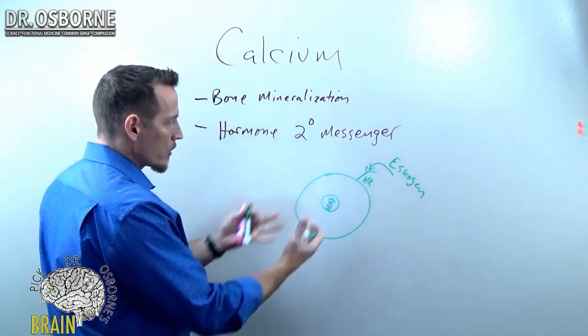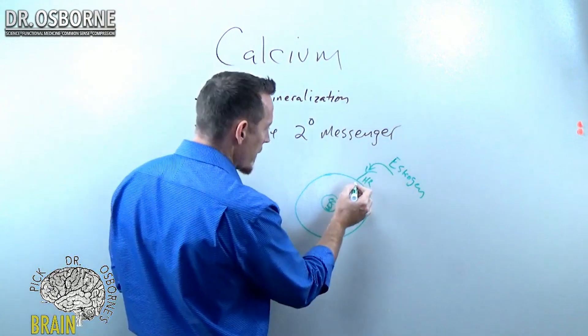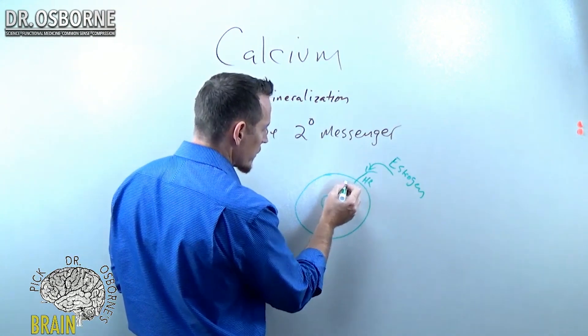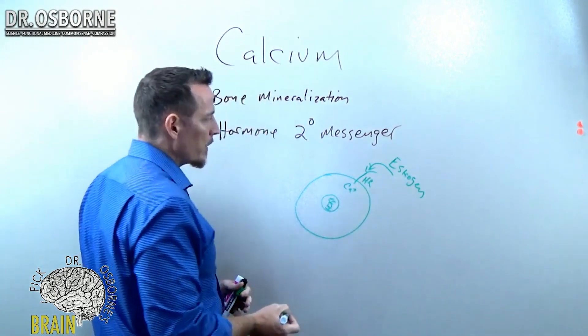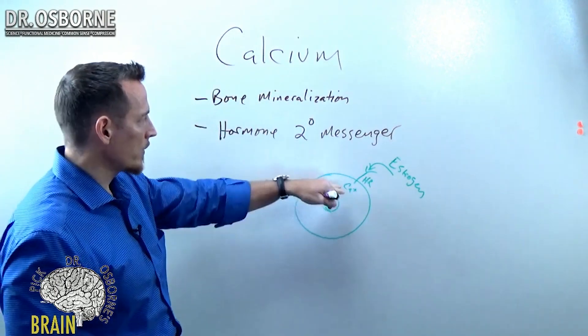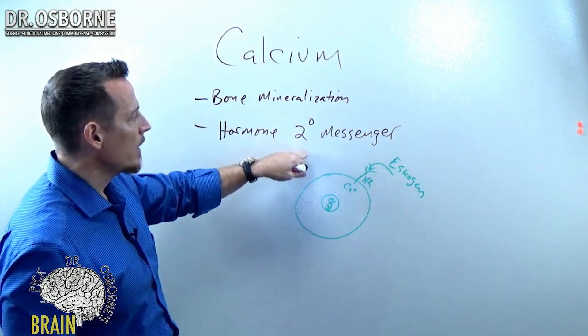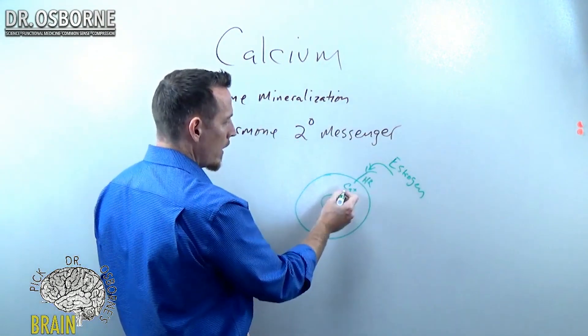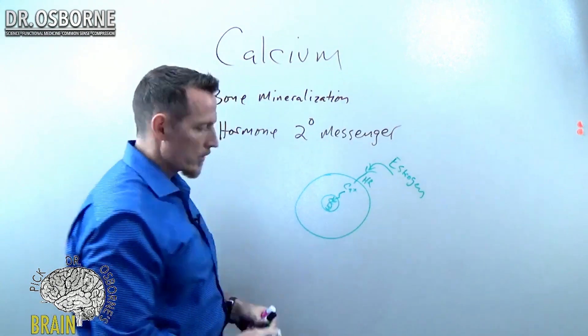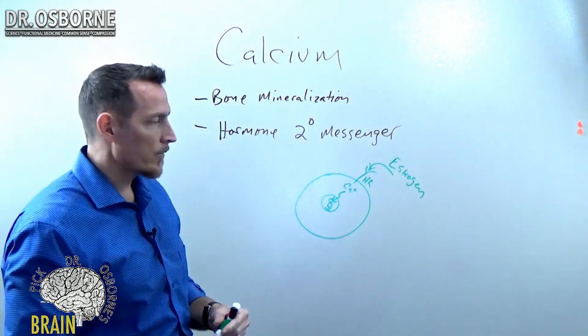That's going to trigger a message to come into the cell. That message, as it's coming through the cell membrane, calcium picks that message up. This is where calcium as a secondary messenger comes in. It picks up the message from the hormone and delivers the message to your DNA. That's what brings about the effect of hormones.